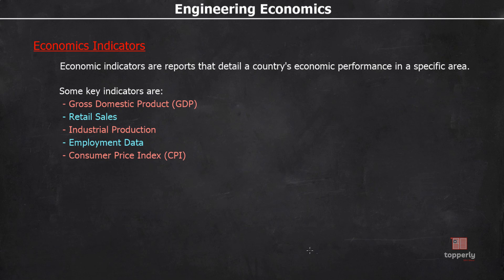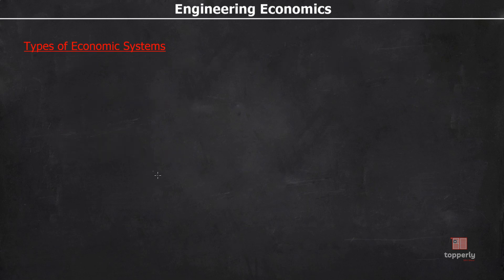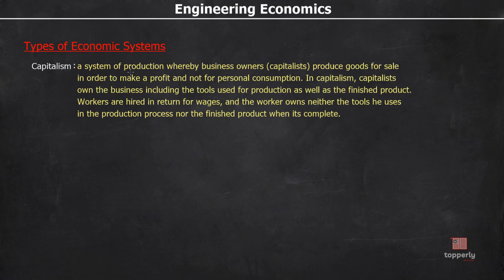Now we need to study the different types of economic systems. The first one is capitalism. Capitalism is a system of production whereby business owners — the capitalists — produce goods for sale in order to make a profit, not for personal consumption. Capitalists own the business including the tools used for production as well as the finished product. Workers are hired in return for wages and own neither the tools nor the finished product. The economy of the USA is an example of a capitalist economy.